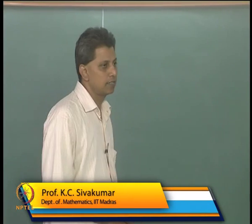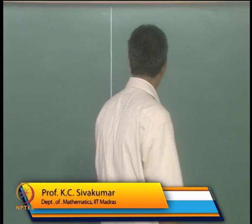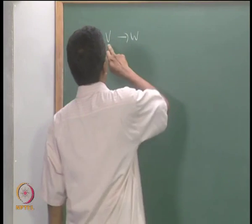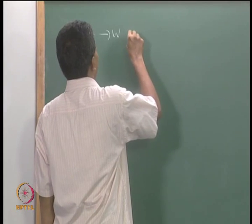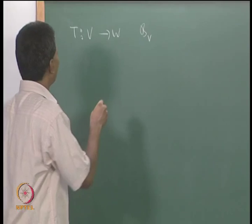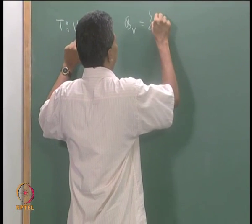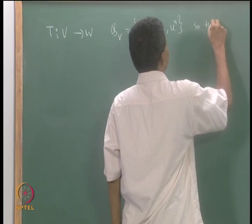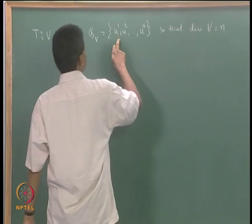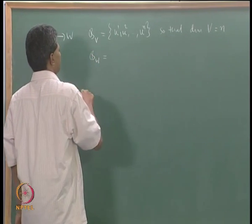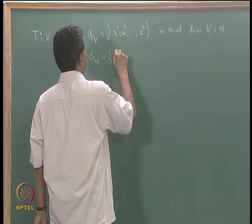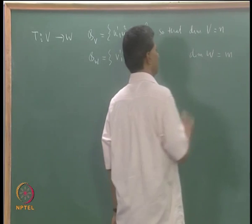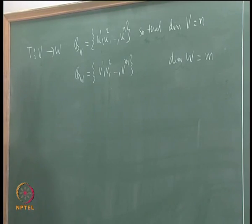Let me recall we are discussing the matrix of a linear transformation. Let me give the framework. Let us say I have T from V to W, where V and W are finite dimensional vector spaces and T is a linear transformation. I have the notation BV for an ordered basis of V: u1, u2, ..., un so that dimension of V is n. I have a basis for W denoted by BW: v1, v2, ..., vm so that dimension of W is m.